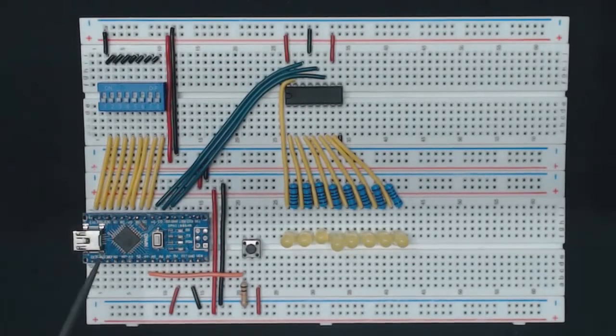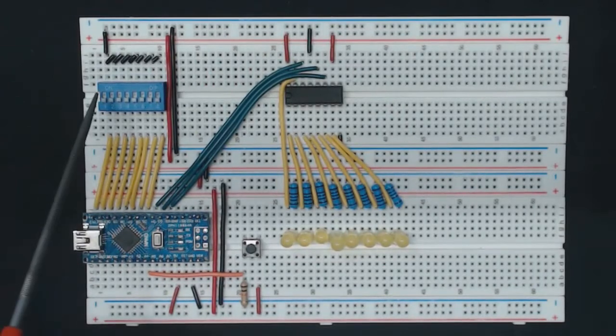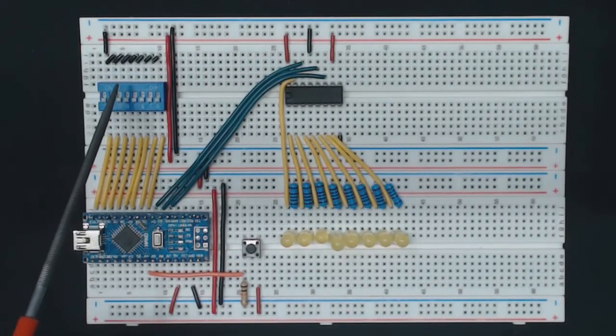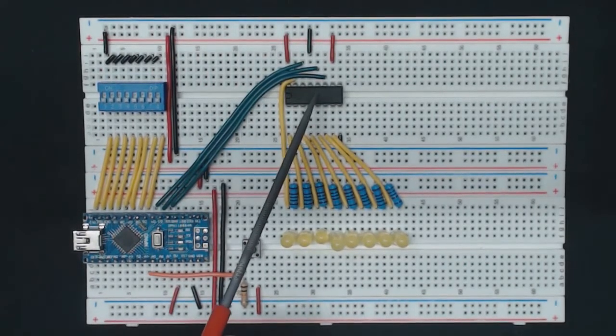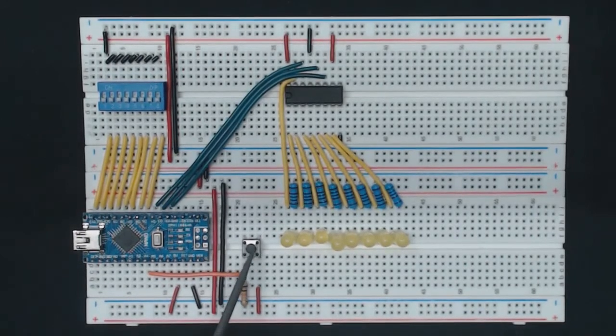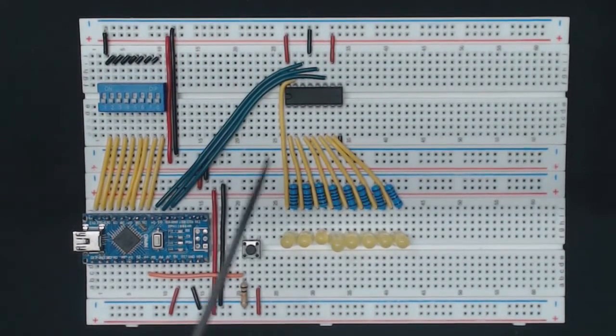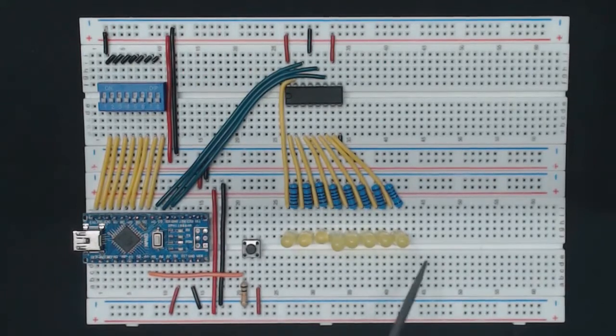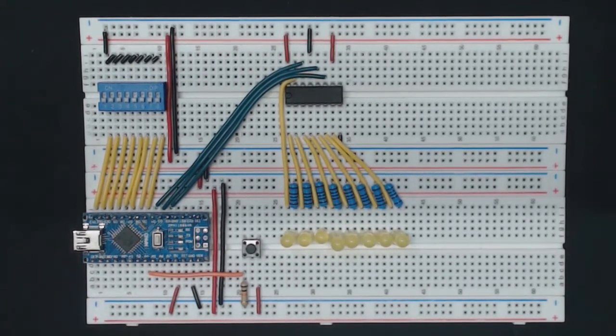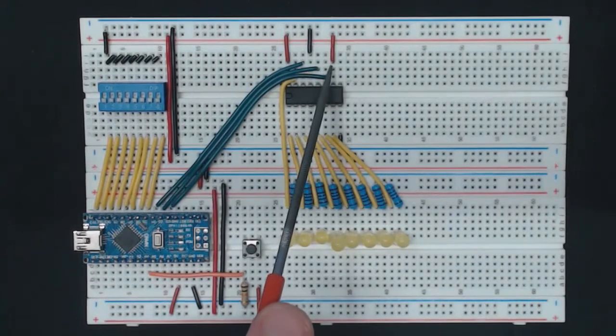Here we have an Arduino that I've programmed to read the byte of data that's specified on this dip switch module here and copy it over to the shift register whenever the push button is pressed. The outputs of the shift register are connected to these LEDs so that we can see what's inside. This is the reset signal for the shift register, and the data sheet says to tie it to VCC if we don't want to use it.